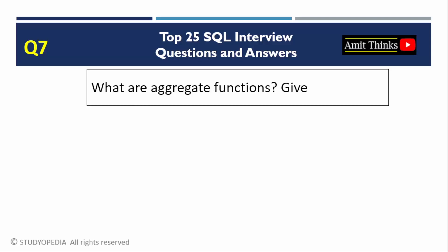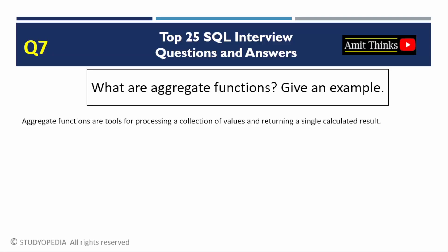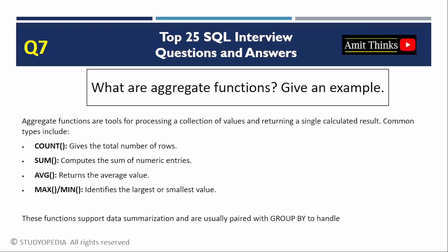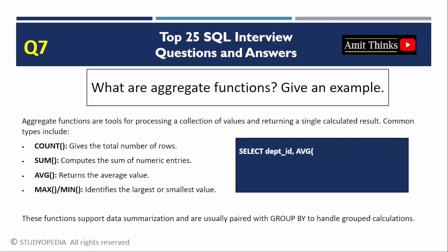Question 7: Aggregate functions in SQL. Aggregate functions perform calculations on a set of values and return a single value. Common functions include COUNT (returns the number of rows), SUM (adds up numerical values), AVG (calculates the average), and MAX/MIN (identifies the largest or smallest value respectively). These functions are essential for data summarization and are often used with GROUP BY for segmented analysis. Here is an example finding the average of salaries using the AVG function.